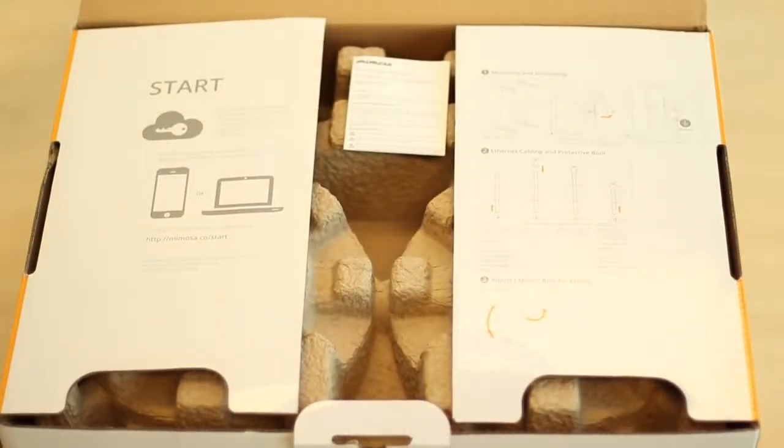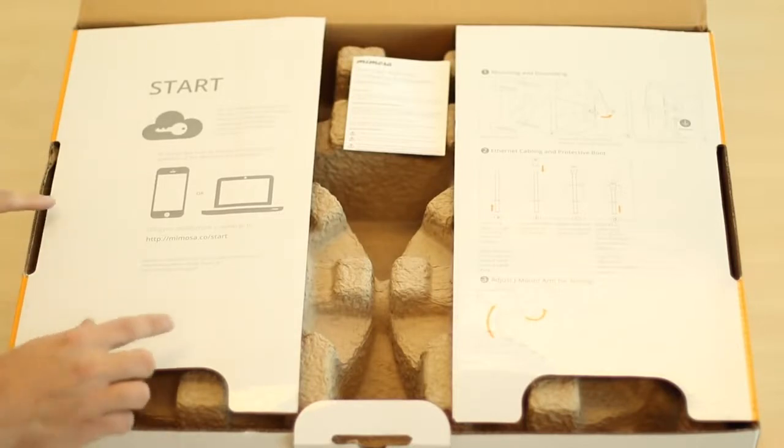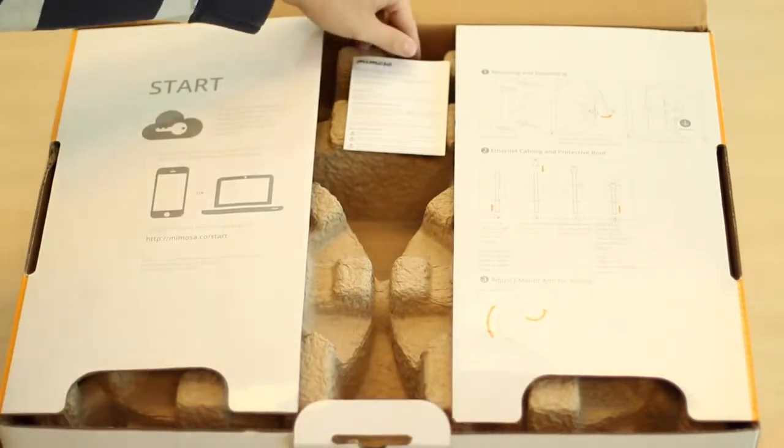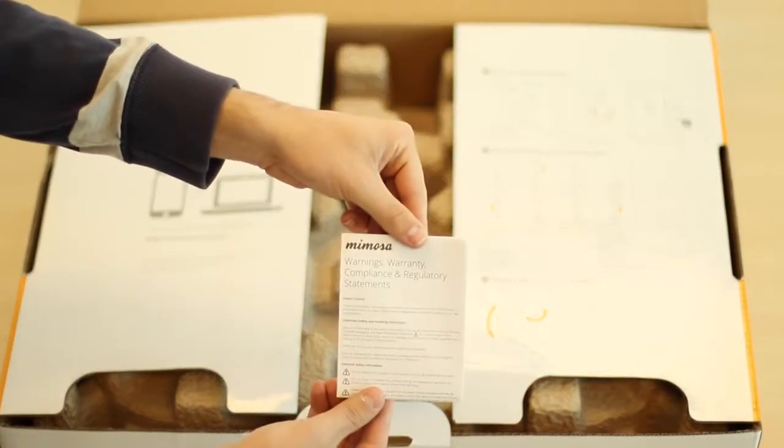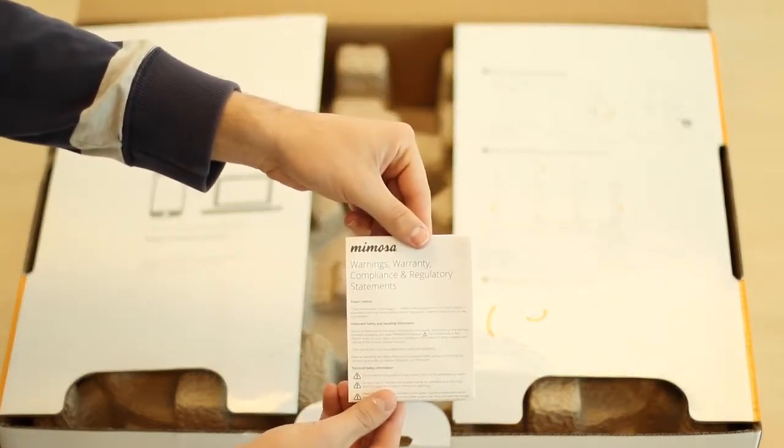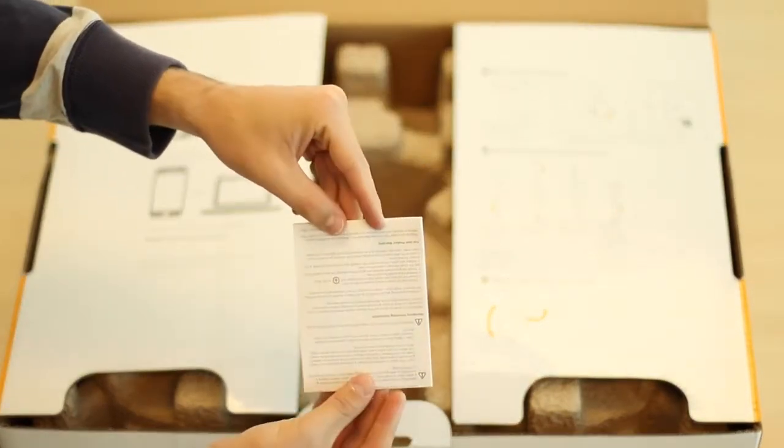Inside the main flap, you will find your startup instructions for setting up the radio as well as visual mounting instructions. Placed on top of the carton is the warranty card describing the compliance and regulatory statements for the product.